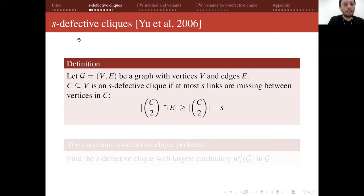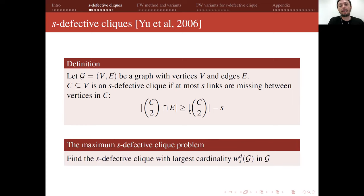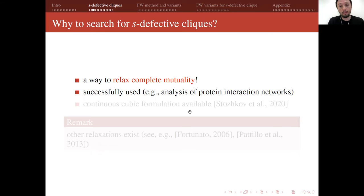This condition is satisfied by the subset C. We define the maximum s-defective clique problem as finding the s-defective clique with the largest cardinality ω_s(G), the s-defective clique number of the graph. This relaxation of complete mutuality has been successfully used in many contexts, such as the analysis of protein interaction networks. There also exists a continuous cubic formulation for this problem, recently proposed in a paper by Stochkov and co-authors published in Mathematical Programming.